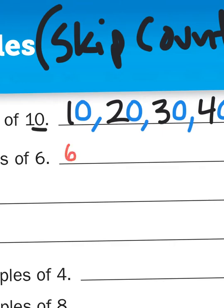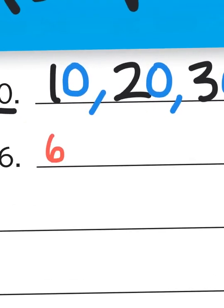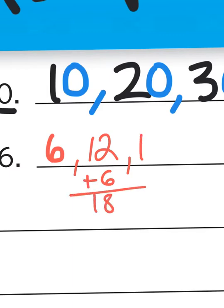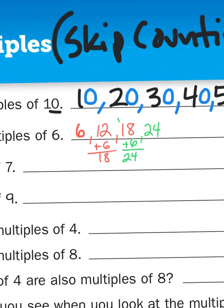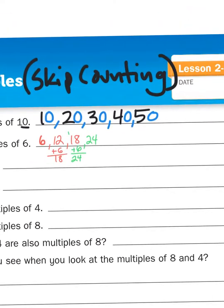6, then when I add 6 to that number, 6 plus 6 is 12. Now, if you don't know what would come next, all you'd have to do is just add 6 to that number. 12 plus 6 is going to give me 18, and then 18 plus 6 more is going to give me 24.